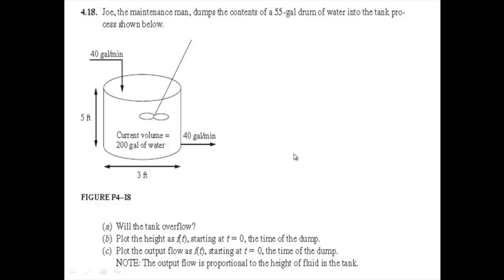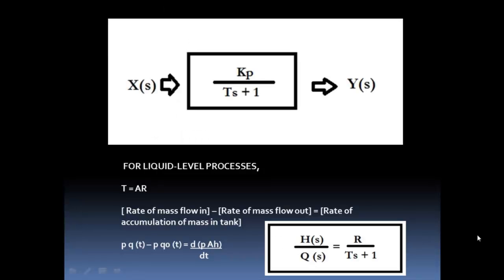Please take note that the output flow is proportional to the height of fluid in the tank. The operating equation we're going to use is x(s) times Kp over (τs + 1), resulting in y(s). For liquid level processes, the equation we use is τ = AR.